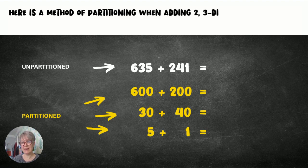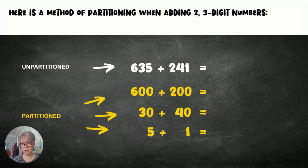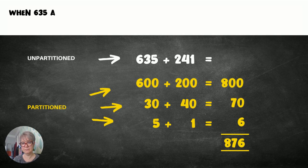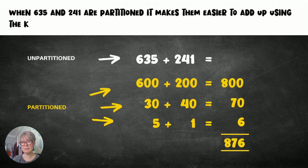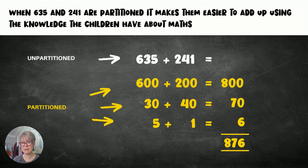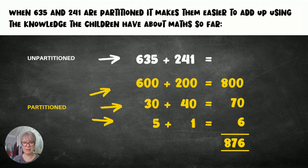Here is a method of partitioning when adding two three digit numbers. Unpartitioned, the sum is 635 plus 241. When you partition it you get 600 plus 200, 30 plus 40, and 5 plus 1. This makes them easier to add up using the knowledge that children have about maths so far. You can see that 600 plus 200 it's much easier to get to 800 using that method, and 30 plus 40 — just add the 3 and the 4 and include the 0 to make 70.